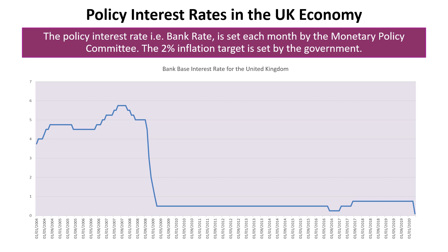Interest rates dropped from 5 percent to 0.5 percent and have pretty much remained very low ever since. You might start to think: are interest rates as active or as effective as they used to be? Does monetary policy using interest rates really count as a viable macroeconomic policy? During the recent coronavirus pandemic, they dropped further from 0.75 percent down to 0.1 percent.